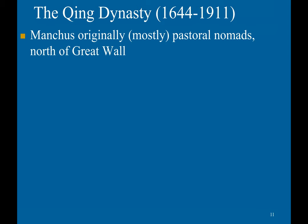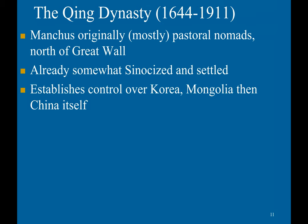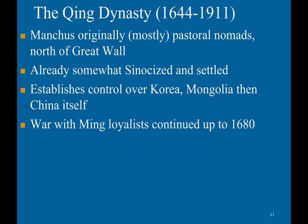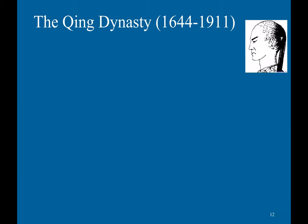The Manchus were originally mostly pastoral nomads living north of the Great Wall. However, unlike the Mongols, they were somewhat sinicized and settled. They established control of Korea, Mongolia, and then China itself, engaging in warfare with Ming loyalists all the way up to 1680. They had support from many Chinese who were fed up with Ming-era corruption.